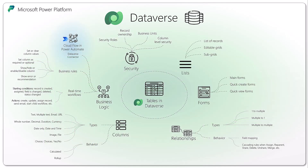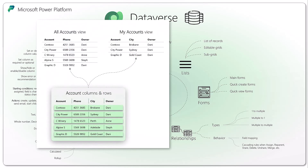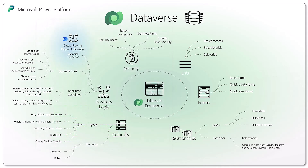Lists and forms — you can define lists of records, specifying the columns and filters for your list. You can have different types of lists with a set of different columns and different filters, including read-only lists, editable grids, and subgrids, which are used within forms. You also have forms — the main form is used when you open a record to visualize and edit it. But you can also create quick create forms or quick view forms to customize the UI in your Power Apps.